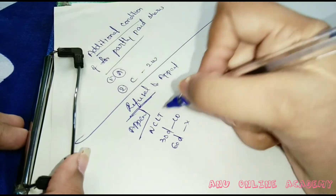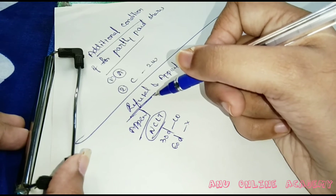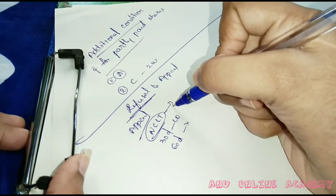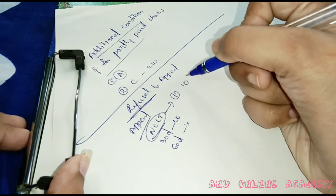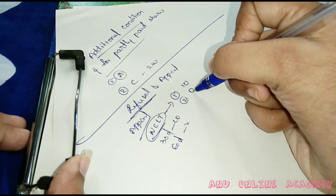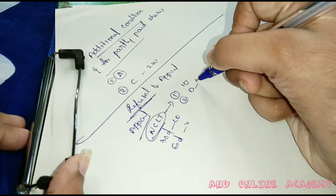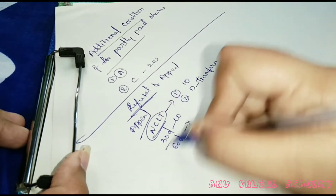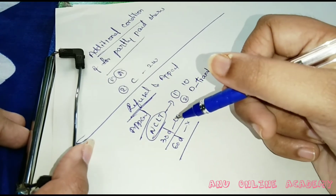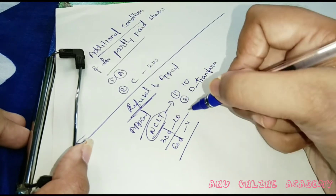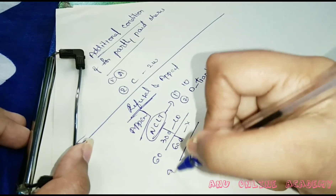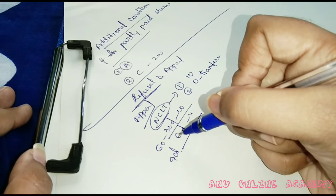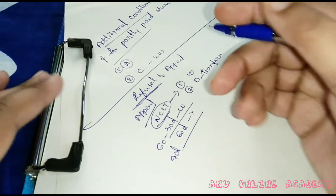Order of NCLT: after hearing both parties, NCLT may either dismiss or order the company to register the name of the shareholder within 10 days of the order, and to pay damages to the transferor and transferee. In case of a public company, all provisions are the same except the time limits are 60 days and 90 days respectively.